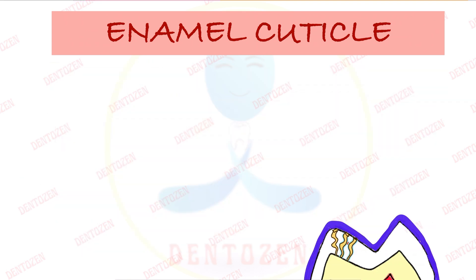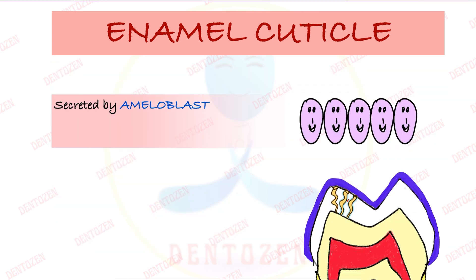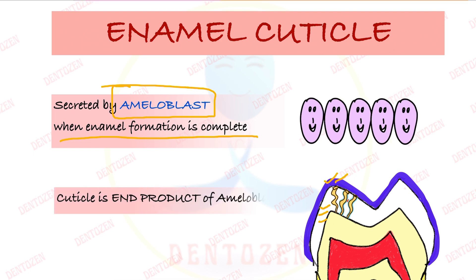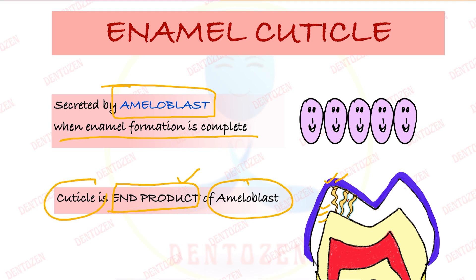The layer is formed by our ameloblast cells — the cells that form enamel also secrete this cuticle. When enamel formation is complete and the ameloblast has finished everything, it finally lays down this enamel cuticle. So cuticle is the end product of the ameloblast cell — remember that, as it can be a viva question.